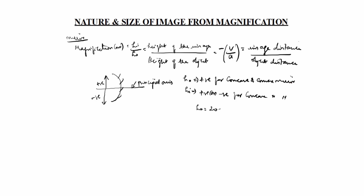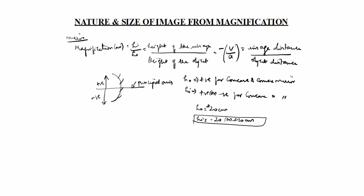ho should come positive for concave and convex mirror. If ho is given as 20 centimeters it comes only positive, but hi can come as minus 20 or plus 20. ho comes positive only for concave and convex mirror. Now we will see lens.